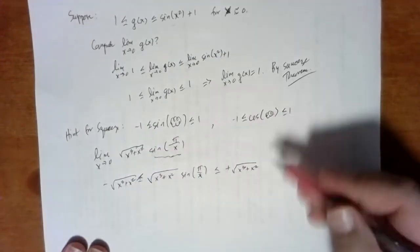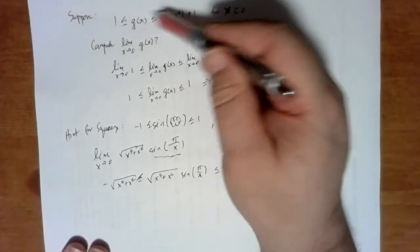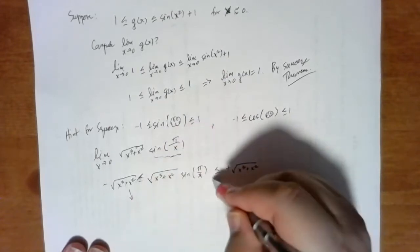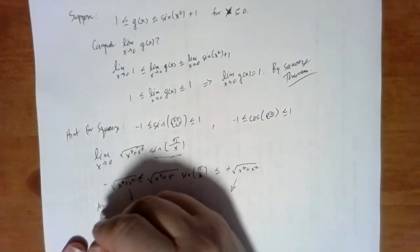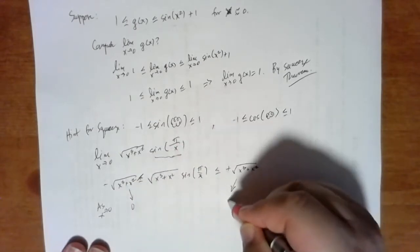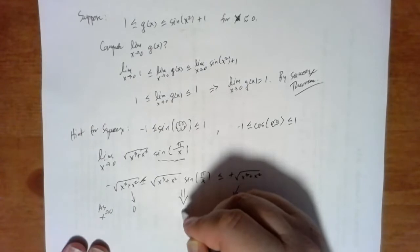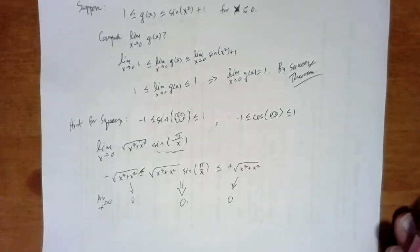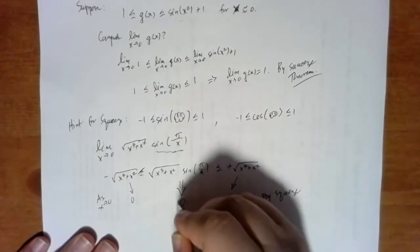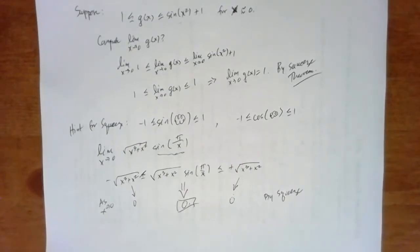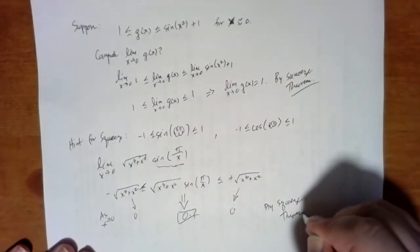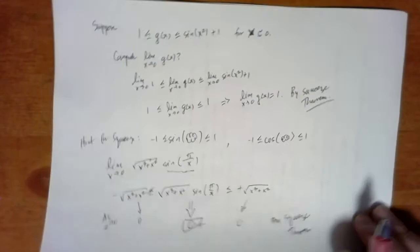That's kind of the first part of the squeeze theorem: you've got the upper and lower functions. The second part of the squeeze theorem is that these two limits better be the same. So as x goes to 0, this function goes to 0, this function goes to 0, therefore we can conclude that this function also goes to 0. And that is by the squeeze. Oh, you shouldn't be as cryptic as I am when you're writing up your solutions.